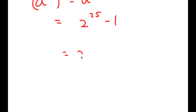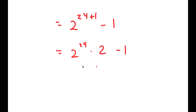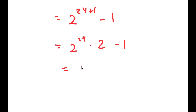Now 2 to the power of 25 is the same thing as 2 to the power of 24 plus 1. I can rewrite this as 2 to the power of 24 times 2 minus 1, and 2 to the power of 24 is the same thing as 2 to the power of 12 squared.